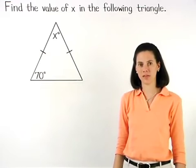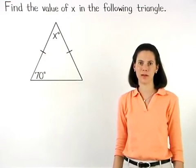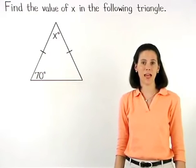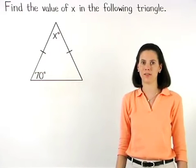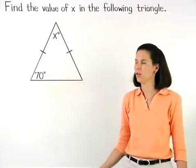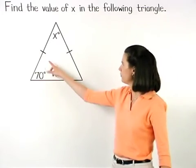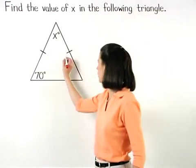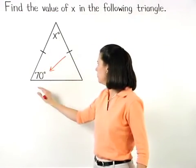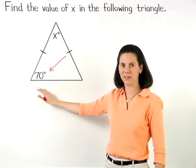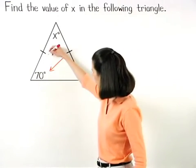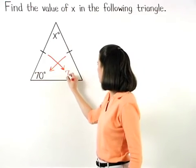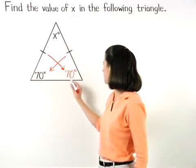Remember that the isosceles triangle theorem states that if two sides of a triangle are congruent, then the angles opposite those sides are congruent. So here, since we have two congruent sides and the angle opposite one of the congruent sides measures 70 degrees, then we know that the other angle opposite the other congruent side must also measure 70 degrees.